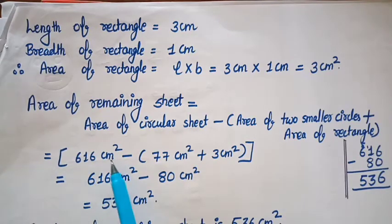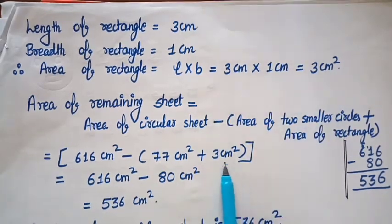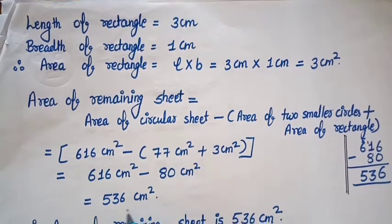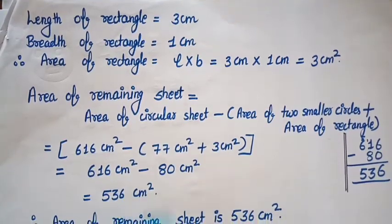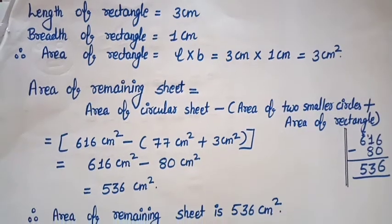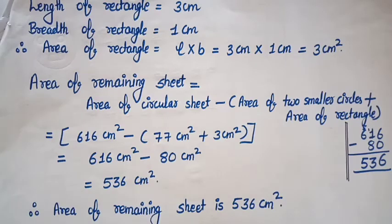Area of remaining sheet = Area of circular sheet − (area of 2 smaller circles + area of rectangle) = 616 cm² − (77 cm² + 3 cm²) = 616 − 80 = 536 cm². Therefore, area of remaining sheet = 536 cm². This is all about question number 10. Thanks.